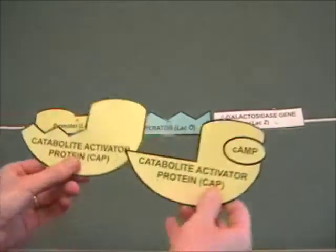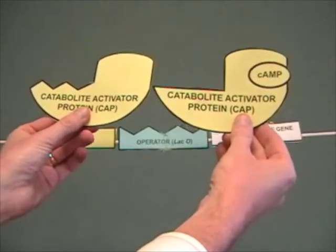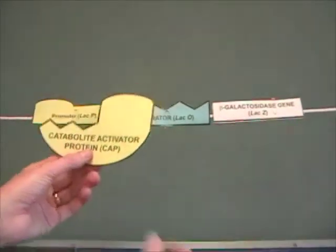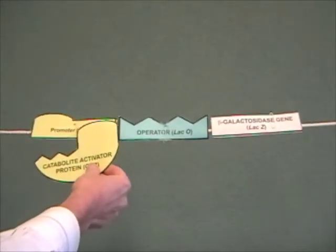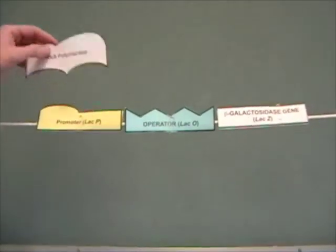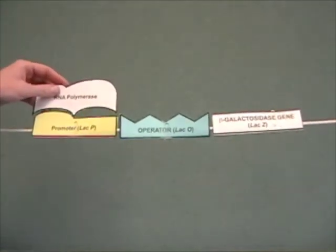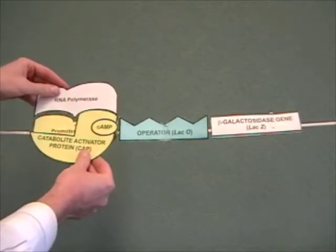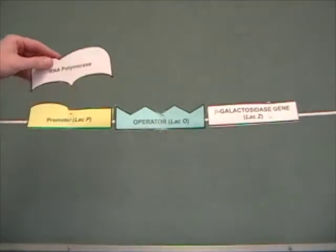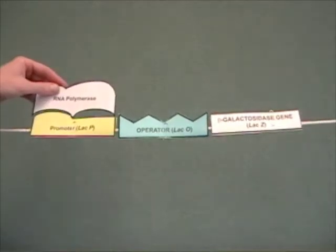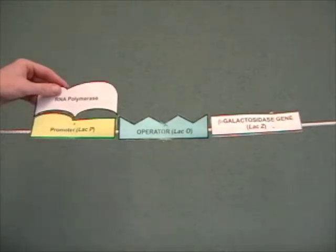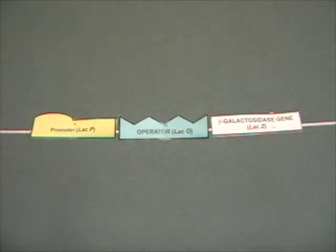Now, in the absence of cyclic AMP, again, there is a conformational change in this CAP protein. And now, the CAP protein cannot bind onto the promoter. So, in other words, you don't get that, in the absence of the cyclic AMP, you don't get that really tight binding of RNA polymerase to the promoter. So, you still can get RNA polymerase binding to the promoter even when the CAP protein isn't bound on there. But, it's not as strong as with the CAP protein bound on.